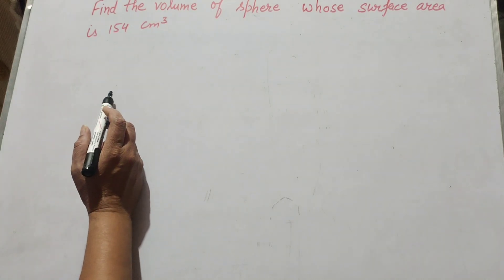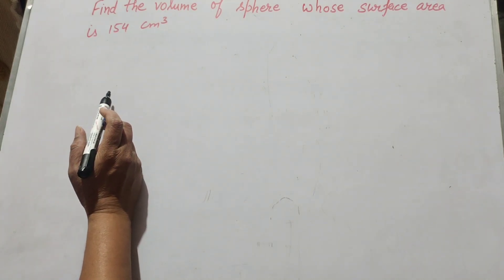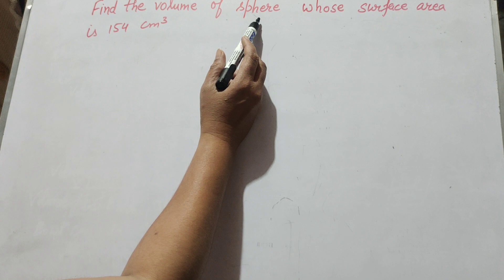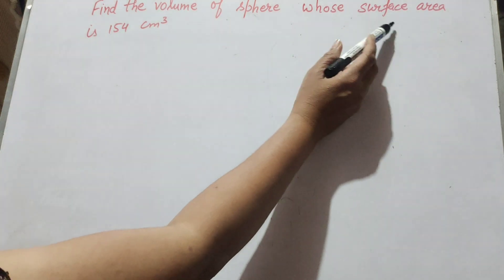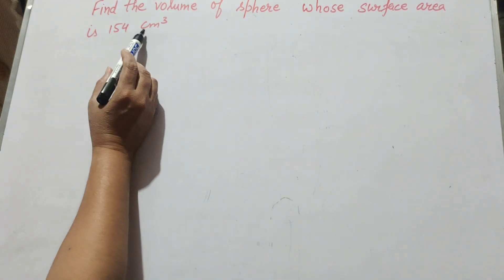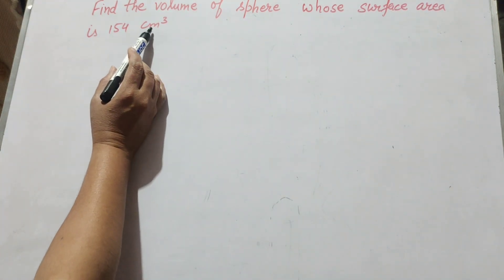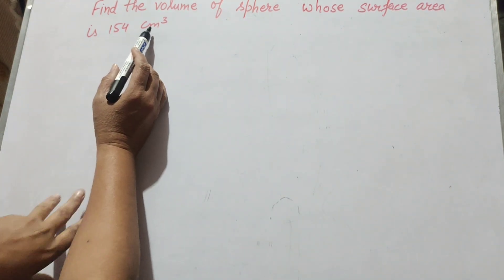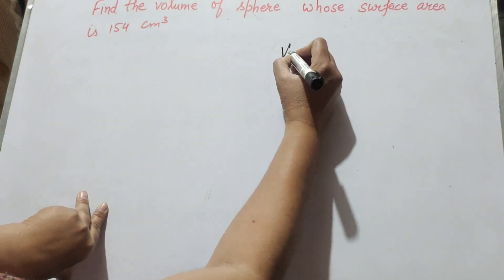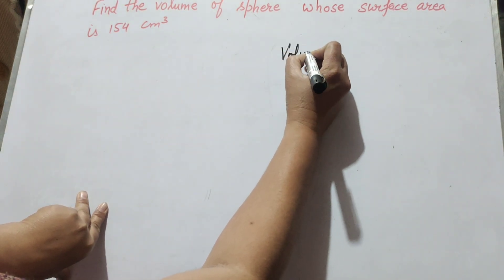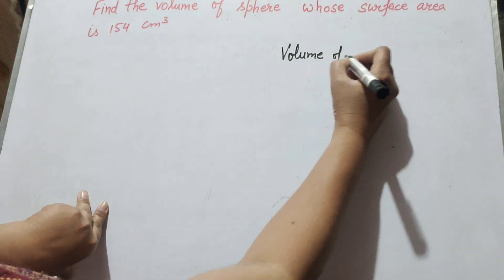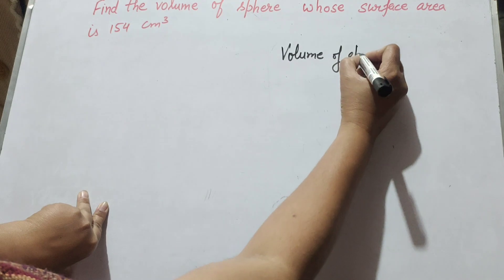Hello friends, welcome to my channel. In this video we discuss the question: find the volume of a sphere whose surface area is 154 centimeter square. In this question, the surface area is given and we find the volume of the sphere.